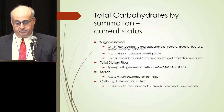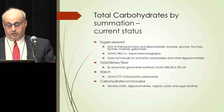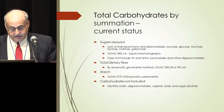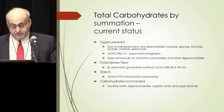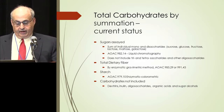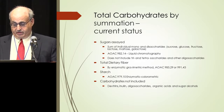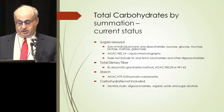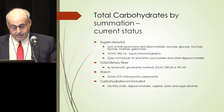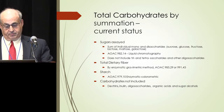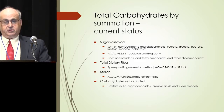For total carbohydrate by summation, we cite the sugars — we do the individual mono- and disaccharides: sucrose, glucose, fructose, lactose, maltose, and galactose — generally done by liquid chromatography, AOAC method 982.14. It does not include the tri- and tetrasaccharides and other oligosaccharides. Total dietary fiber is measured by enzymatic gravimetric method, either AOAC 985.29 or 991.43. Starch is generally done by an enzymatic colorimetric method, AOAC 979.10. But those carbohydrates do not include dextrins, inulin, oligosaccharides, various organic acids, and sugar alcohols.